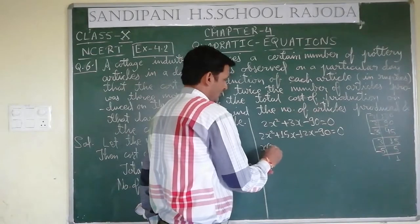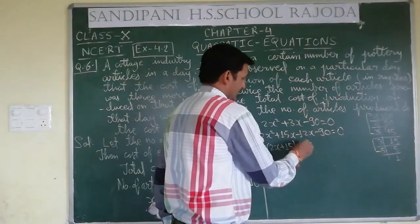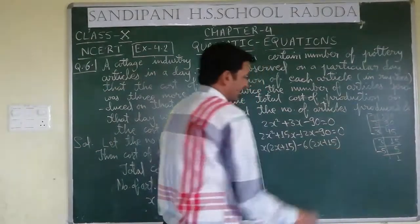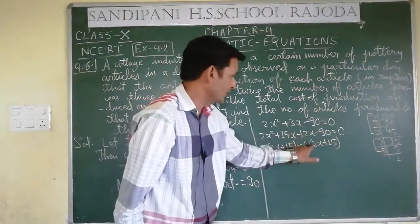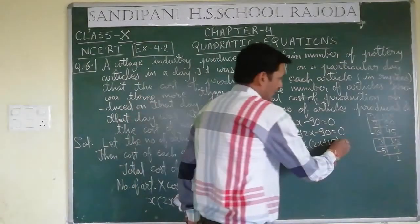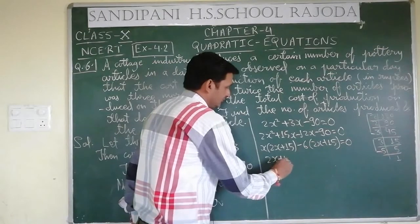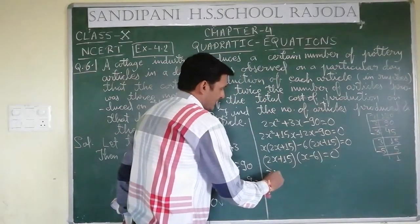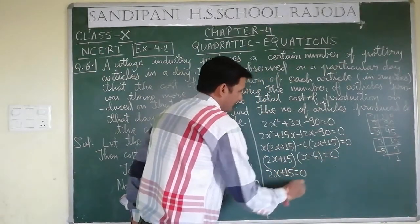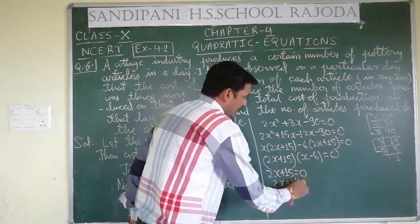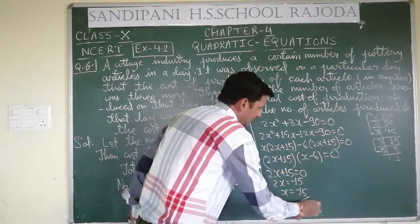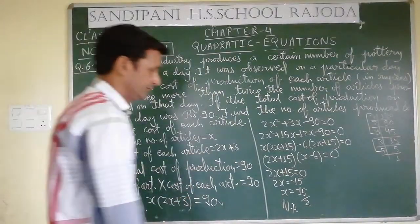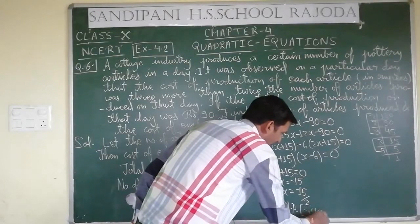Taking x common: x(2x plus 15). Taking minus 6 common: minus 6(2x plus 15) equals 0, since 6 times 15 equals 90. So (2x plus 15)(x minus 6) equals 0. This gives 2x plus 15 equals 0, meaning x equals minus 15 over 2 — not possible, since the number of articles cannot be negative.